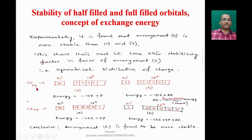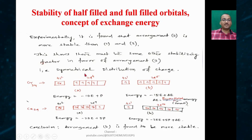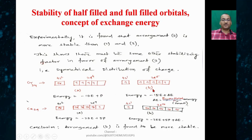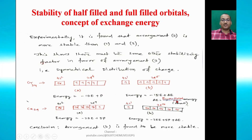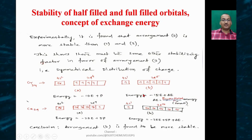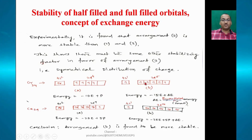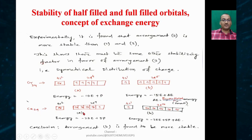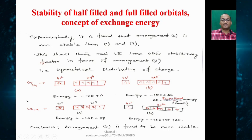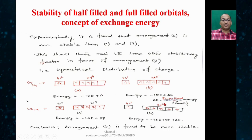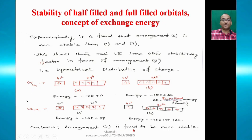For chromium (Z=24): configuration A (4s² 3d⁴) has energy −10e+P, while configuration B (4s¹ 3d⁵) has energy −15e+ΔI (promotional energy). Configuration B is found to be more stable. For copper (Z=29): configuration A (4s² 3d⁹) has energy −25e+5P, while configuration B (4s¹ 3d¹⁰) has energy −25e+5P+ΔI. In both cases, arrangement B is found to be more stable experimentally.